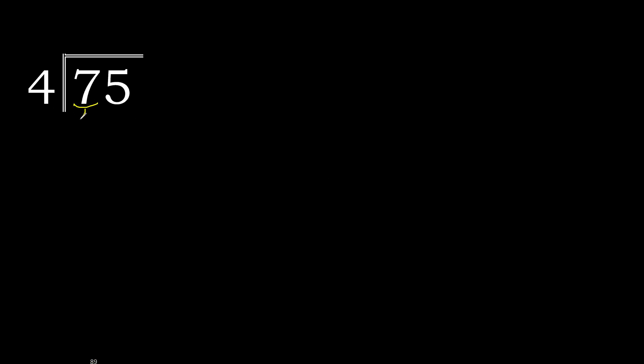75 divided by 4. Starting with 7 — 7 is not less, so we work with 7. 4 multiplied by which number is nearest to 7 but not greater? 4 multiplied by 2 is 8, which is greater. Multiplied by 1 is 4, which is not greater. So 7 minus 4 is 3.